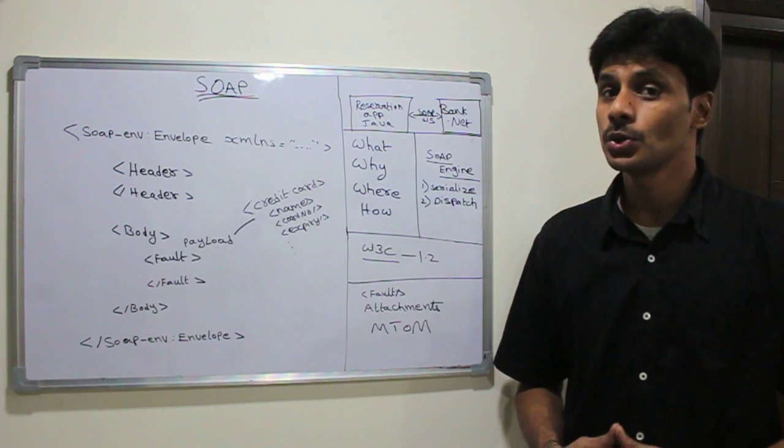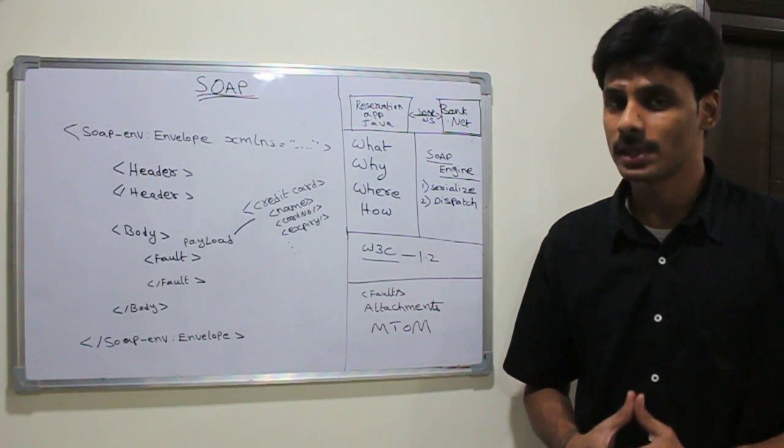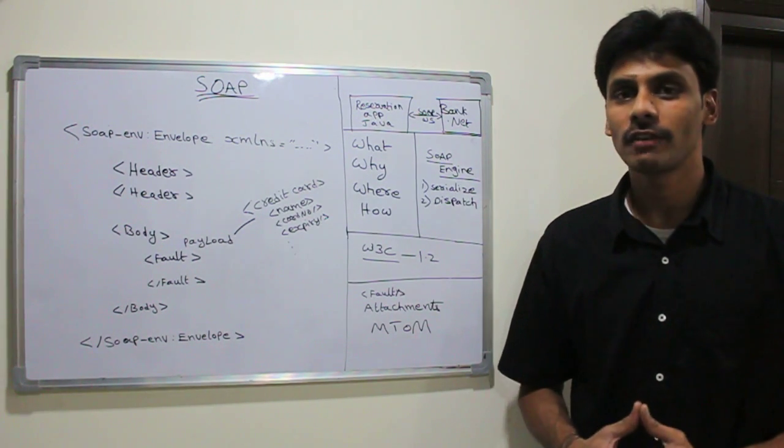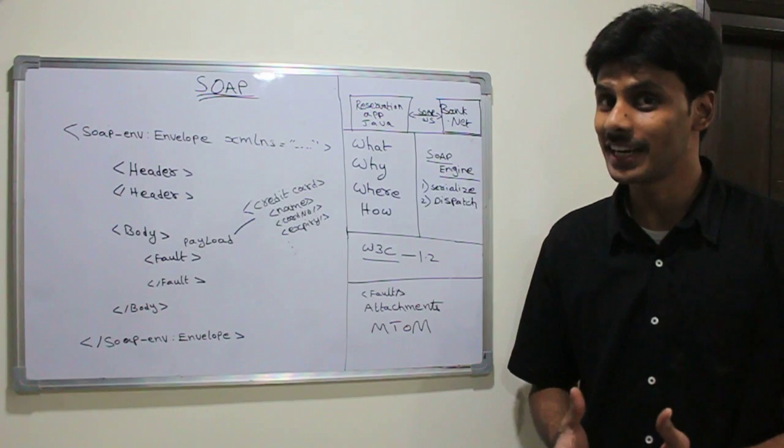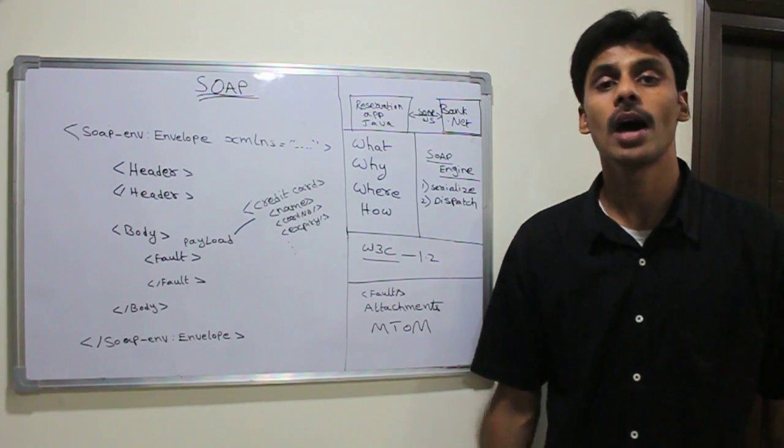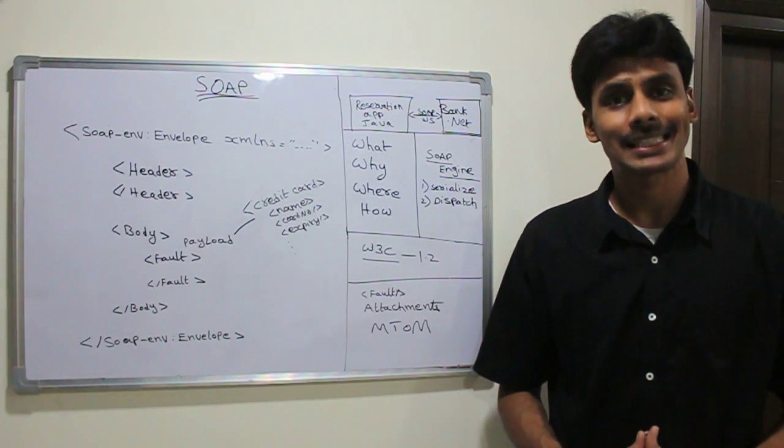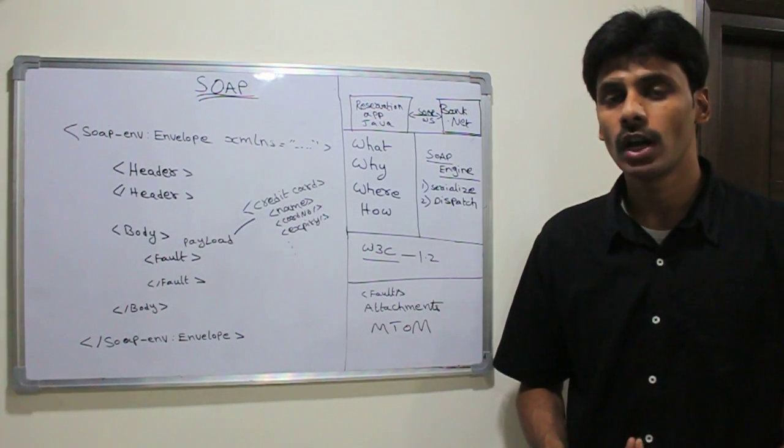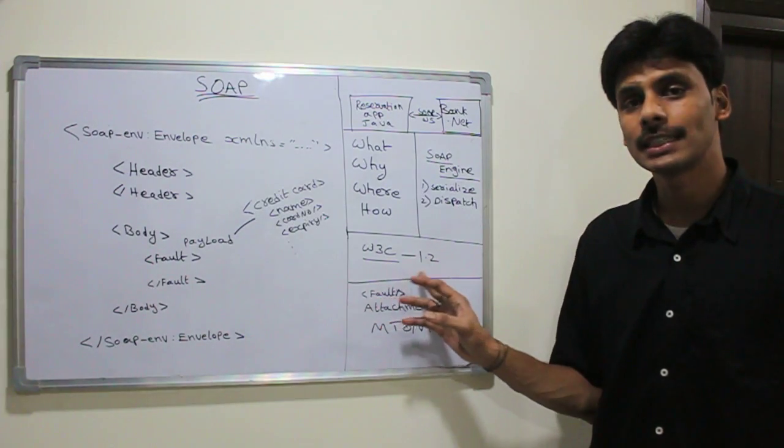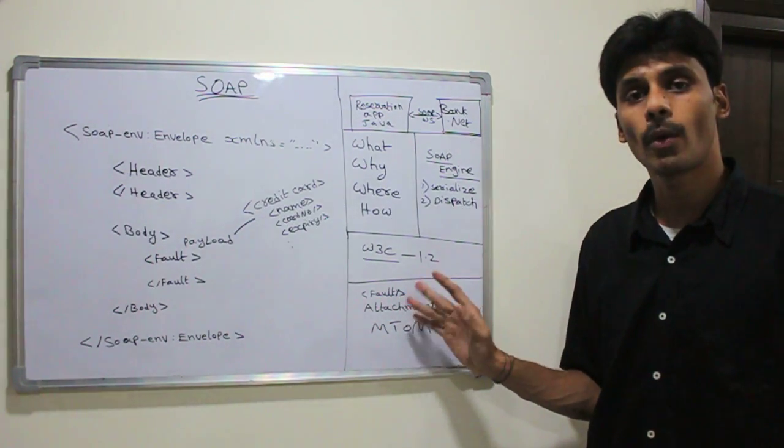The goal for this presentation is to give an overview of SOAP specification. By the end of it, you will learn what SOAP is, why we need it, where to use it, and also how to use it. SOAP stands for Simple Object Access Protocol. It is a specification from World Wide Web Consortium. The current version of SOAP is 1.2.